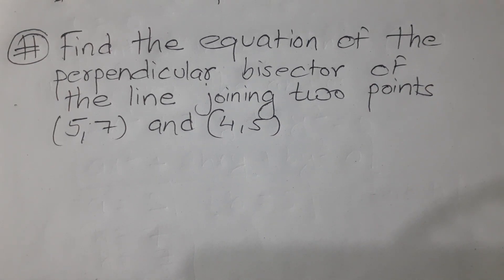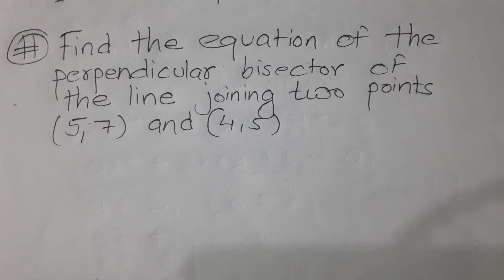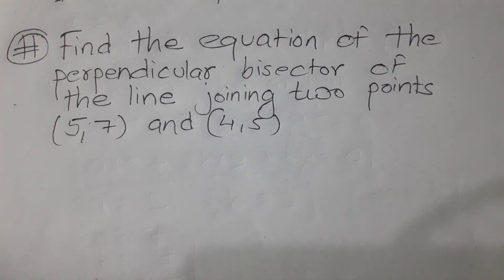Hello friends. In today's video we are going to learn about how to find the equation of a perpendicular bisector of the line joining any two points. You can see the question right now on the screen: find the equation of the perpendicular bisector of the line joining the two points 5 comma 7 and 4 comma 5.